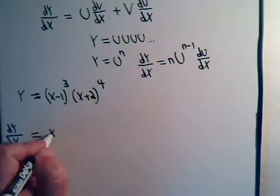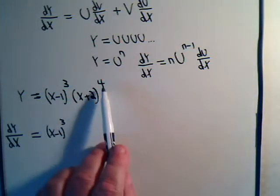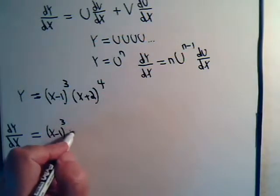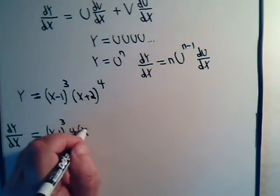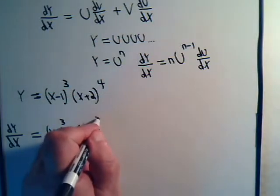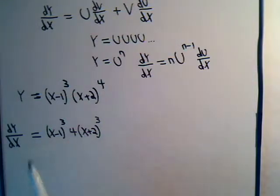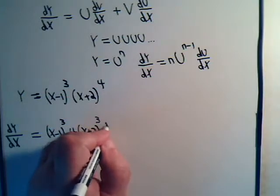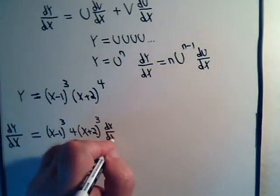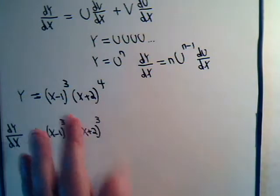Here we have x minus one cubed. We want to multiply by the derivative of the second function, so we bring the four down: four times x plus two to the third power. Then times the derivative of what's inside, which is dx/dx — just one. Times the derivative of the constant term is zero, and dx/dx is just one, so we usually don't bother to write that down.